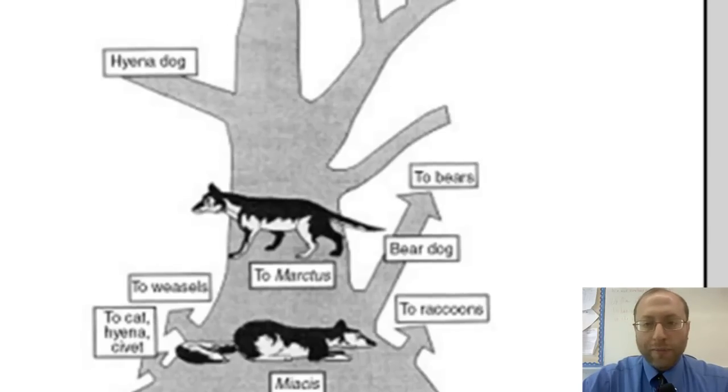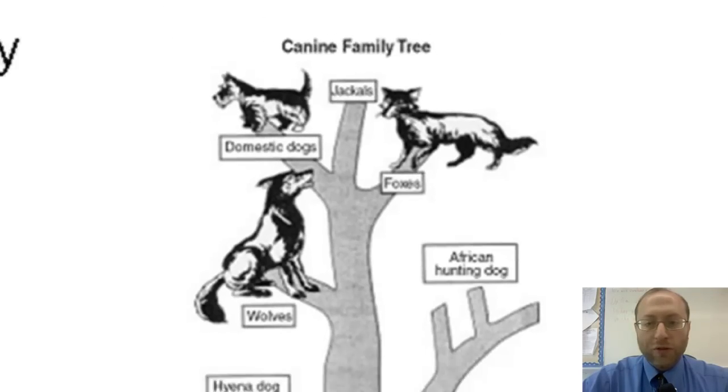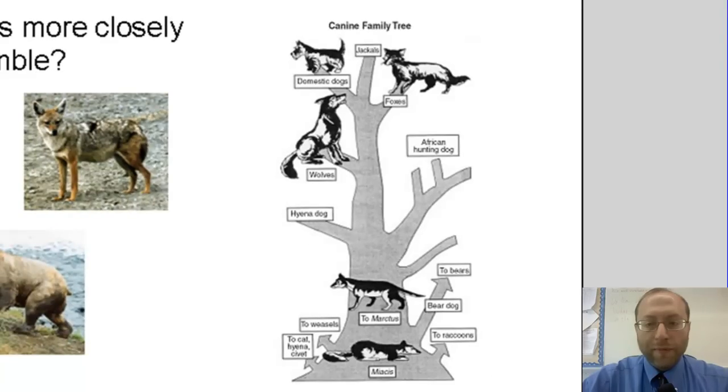Go up towards the top, and you'll see wolves right near dogs, jackals, and foxes. So raccoons are closer to the bear, so this cladogram shows that raccoons and bears are more closely related. Therefore, they should resemble each other more closely, which is what we see in the pictures.